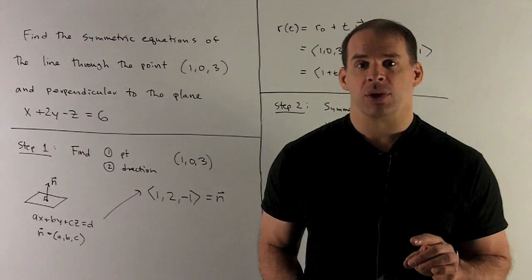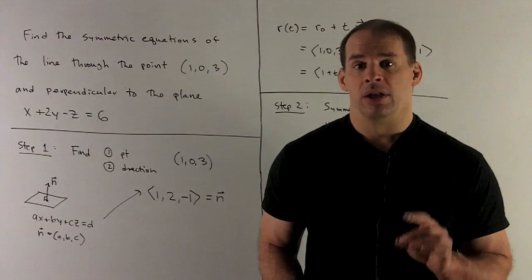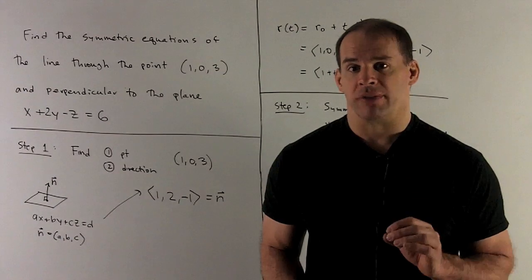So in this case, we have a perpendicular direction given by (1, 2, -1). So that's what we'll use for the direction of our line.